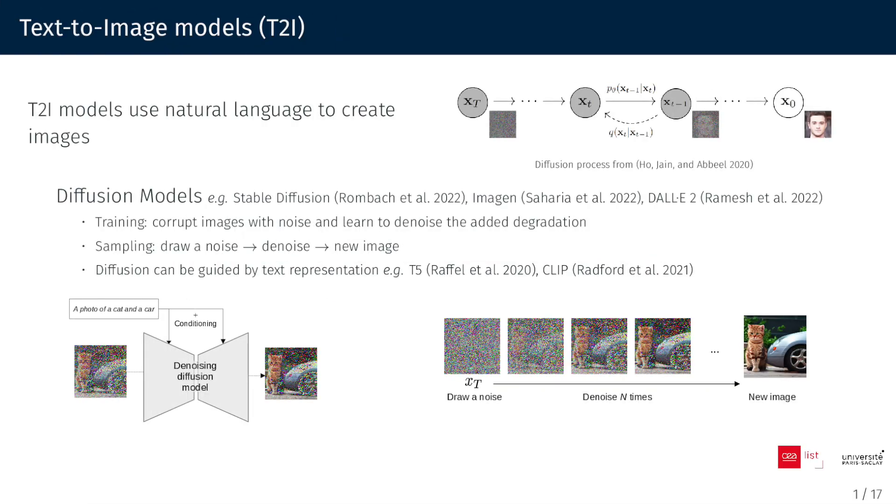Let me start with a brief overview of text-to-image models, which leverage natural language to generate images. Users express their thoughts in text, and the model creates images reflecting the written content. Currently, among the most advanced architectures are diffusion models, such as stable diffusion. These models are trained by introducing noise to images and learning to denoise the added degradation.